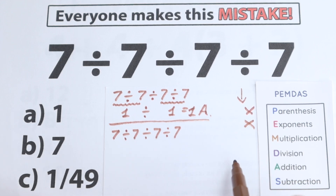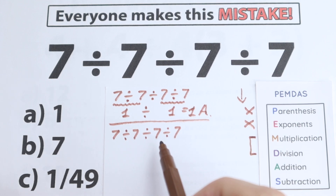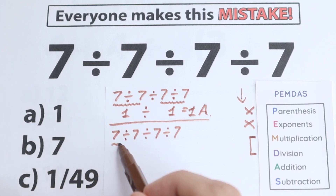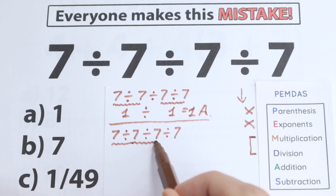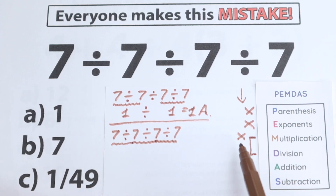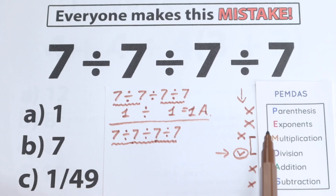The next step is Multiplication and Division. We need to look at the expression as one group and find where we have multiplication and division signs. We have a division sign here, another division sign, and one more division sign — so we have a lot of division signs but no multiplication sign. And we also don't have any addition or subtraction signs. So we proceed to the division part.